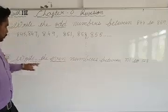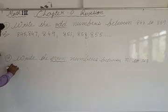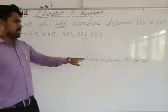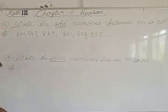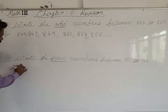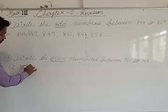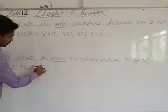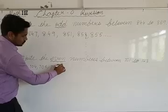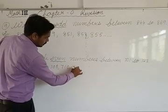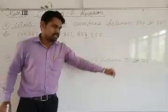Same way, for even numbers, we do the same. Here it is also asking in between. So after 701, 702 will be the even number — not 703. So: 702, 704, 706, 708, 710, 712, and likewise you have to do the rest up to 723.